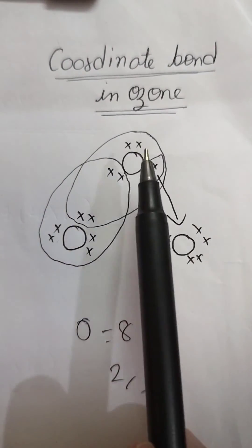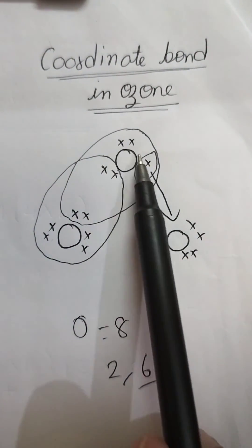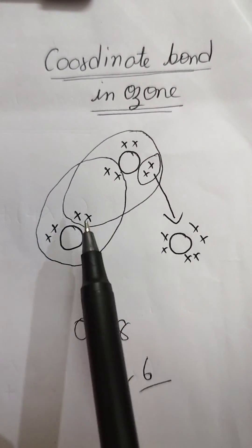So what will happen? Any one of these oxygens will share a pair of electrons. They already have two pairs of electrons free. This atom also has two pairs of electrons which are free, right?